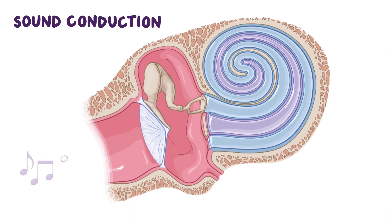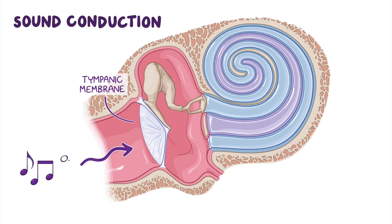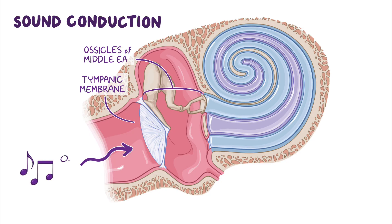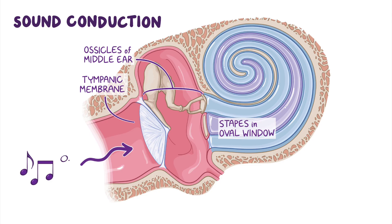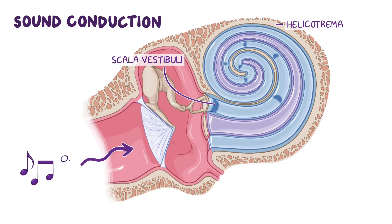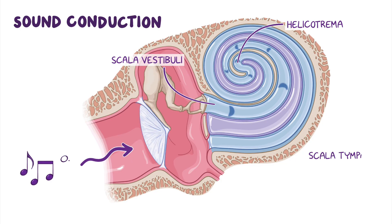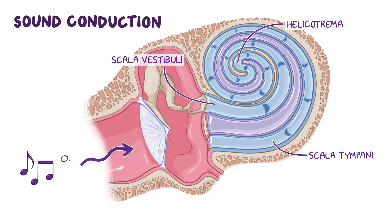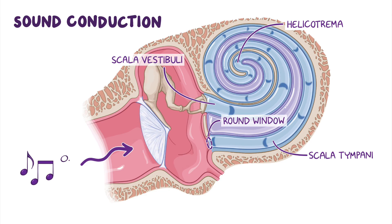How do these structures help us hear? Well, when you are listening to a song, sound waves travel to the tympanic membrane and cause it to vibrate. These vibrations are transferred to the auditory ossicles in the middle ear. The base of the stapes in the oval window vibrates and creates waves of hydraulic pressure in the perilymph, which move within the scala vestibuli. These waves then reach the helicotrema, which is the point where the scala vestibuli and scala tympani are connected, and then continue on in the scala tympani.